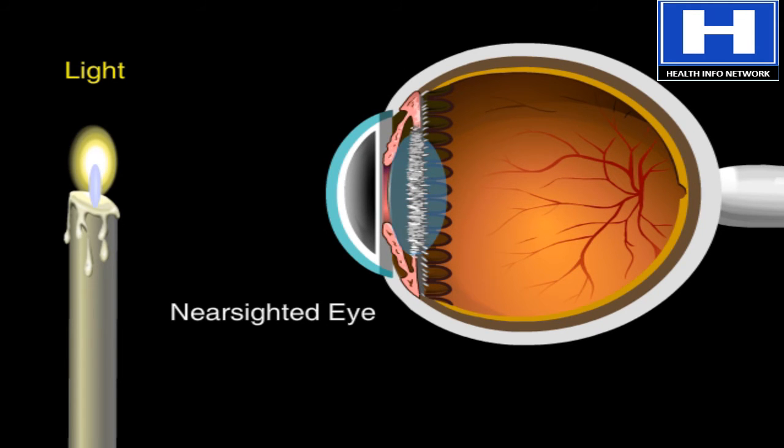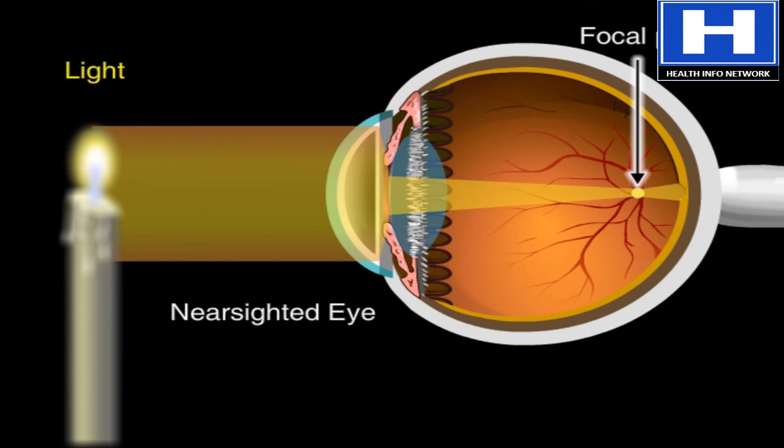But what happens if the eye is longer than normal? The longer the eye, the more distance there is between the lens and retina. But the cornea and lens still bend light the same way. That means the focal point will be somewhere in front of the retina, rather than on it. This makes it difficult to see things that are far away. A person with a long eye is said to be nearsighted.